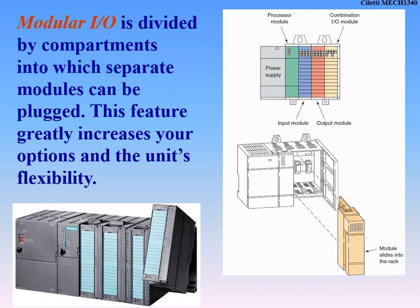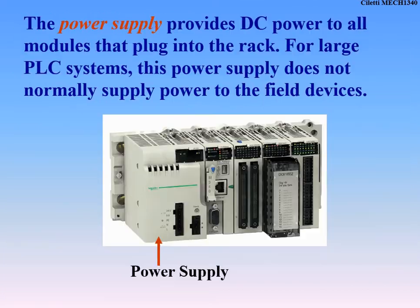Modular IO allows the PLC to keep expanding and adding more inputs and outputs. Fixed IO can only handle a set number, say 128 inputs and outputs. For the power supply — all PLCs have to take 120 volts from the wall, rectify it, and convert it to 24-volt DC because all of our IO runs on 24-volt DC. Power supplies are sometimes attached to the PLC and sometimes separate, depending on the unit.